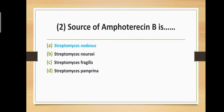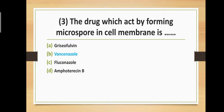Question number three: Which drug acts by forming micropores in the cell membrane? Option A: griseofulvin, Option B: voriconazole, Option C: fluconazole, Option D: triconazole. The correct answer is Option B — voriconazole acts by forming micropores in the cell membrane.